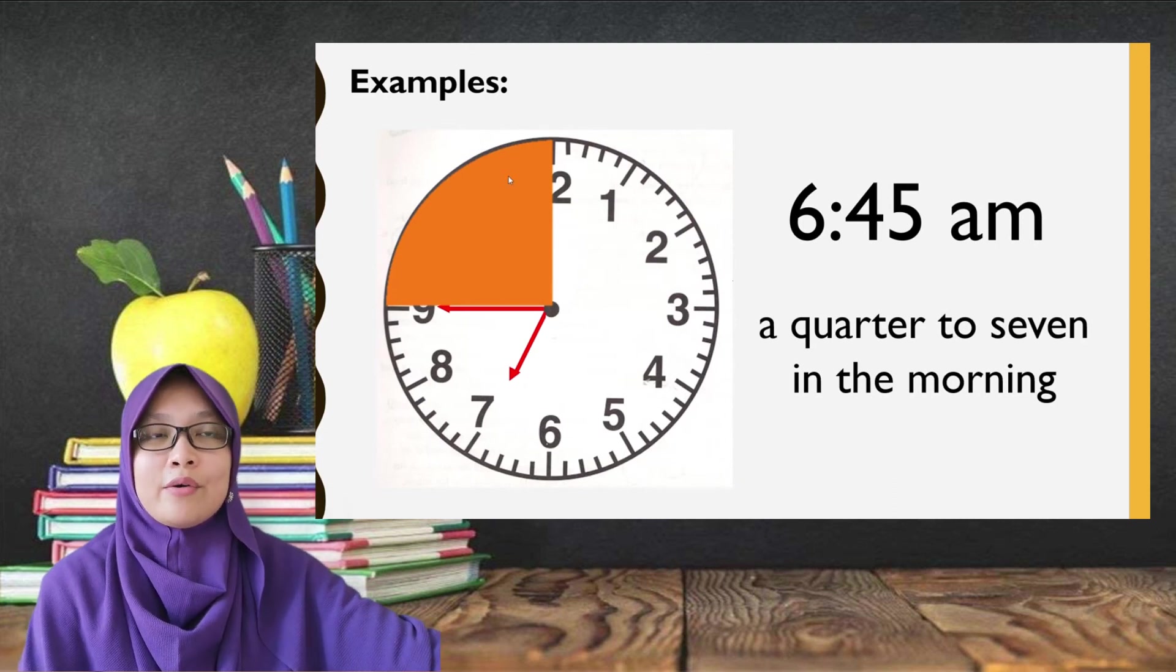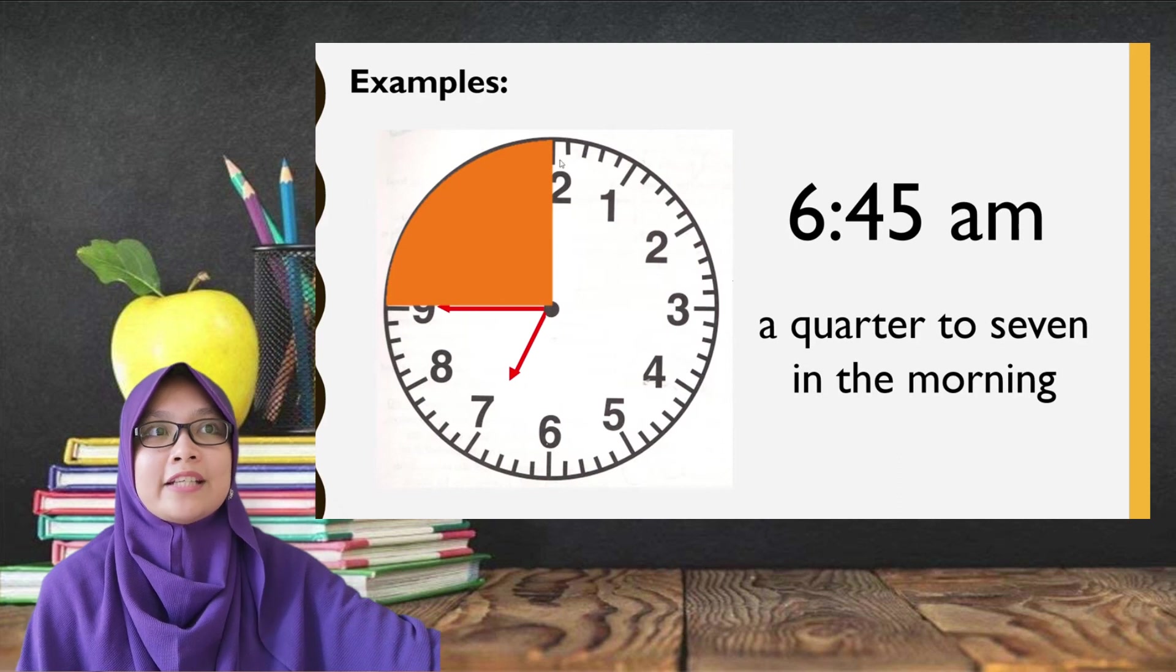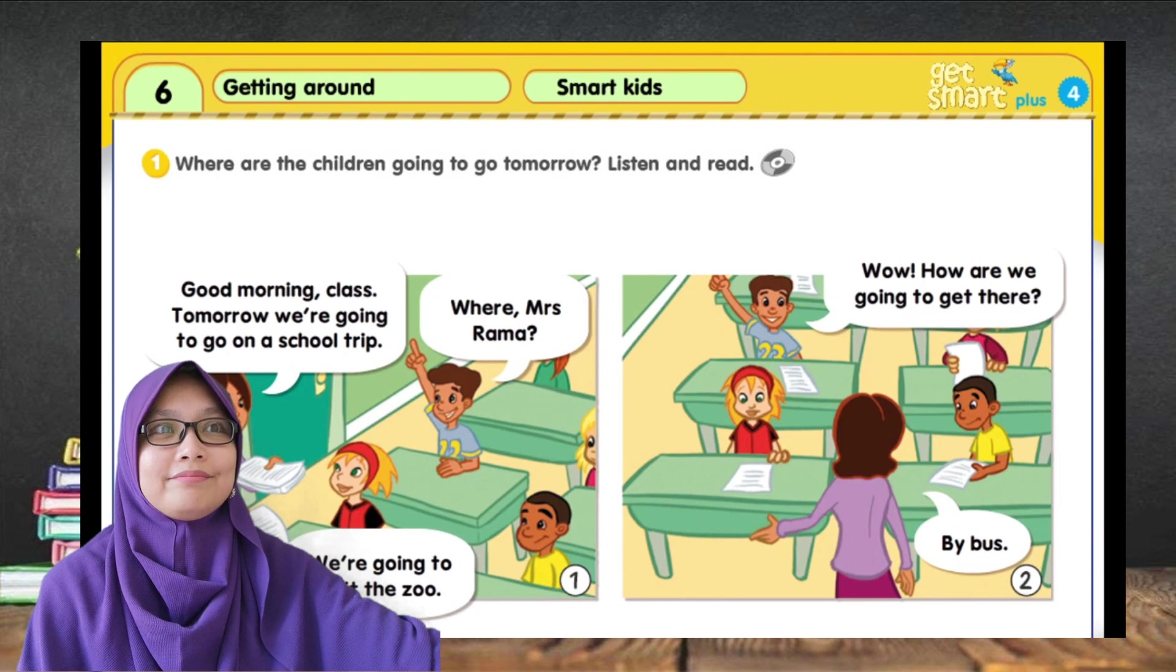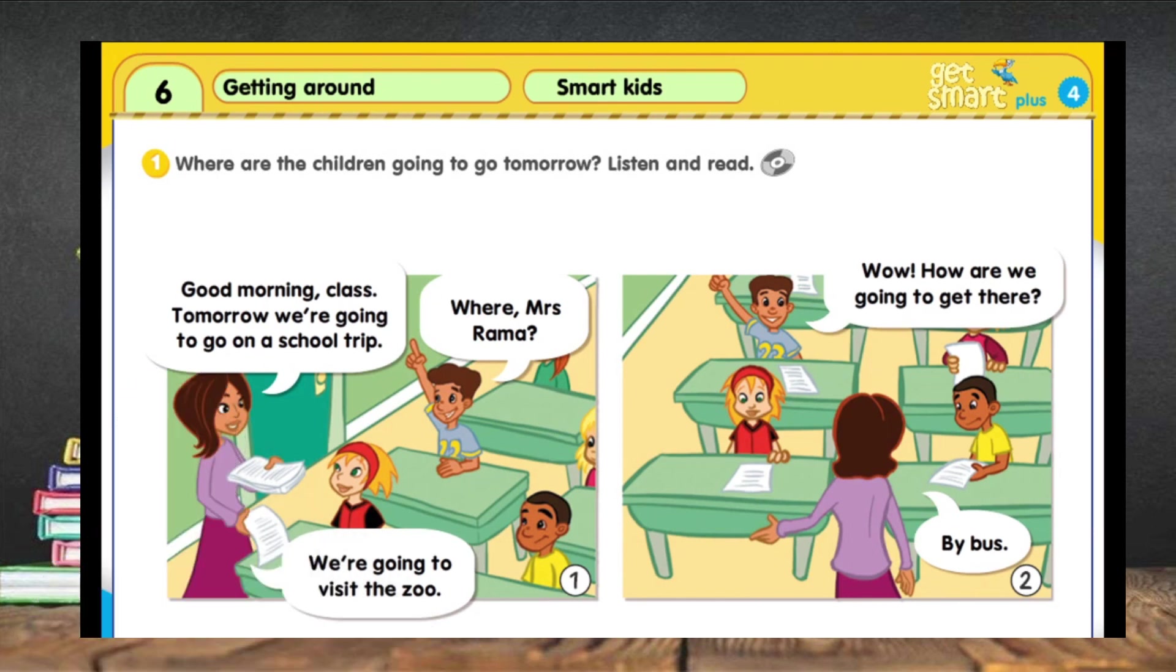So now, on page 60 in your textbook, please read this together. Number 1. Where are the children going to go tomorrow? Listen and read.